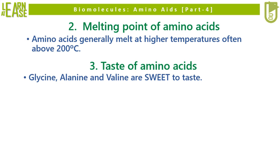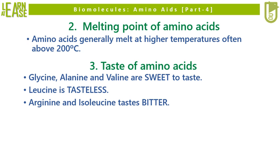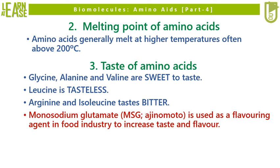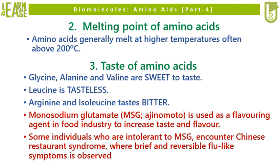Amino acids glycine, alanine, and valine are sweet to taste. Leucine is tasteless. Arginine and isoleucine taste bitter. Monosodium glutamate, abbreviated as MSG and known as aginomoto, is used as a flavoring agent in the food industry to increase taste and flavor. Some individuals who are intolerant to MSG encounter Chinese restaurant syndrome, where brief and reversible flu-like symptoms are observed.